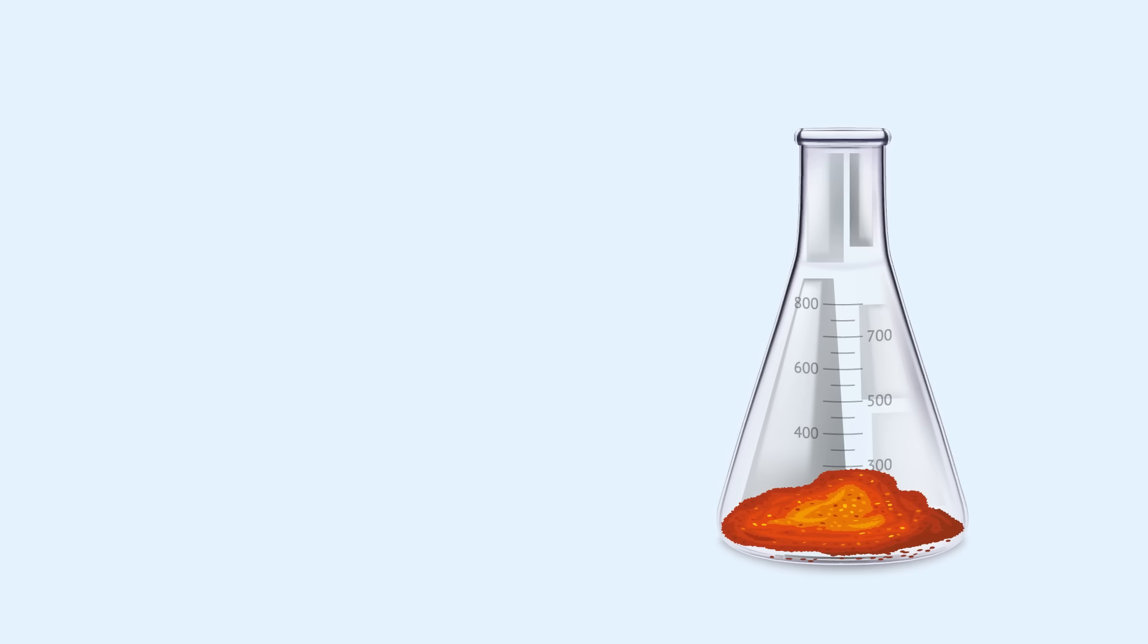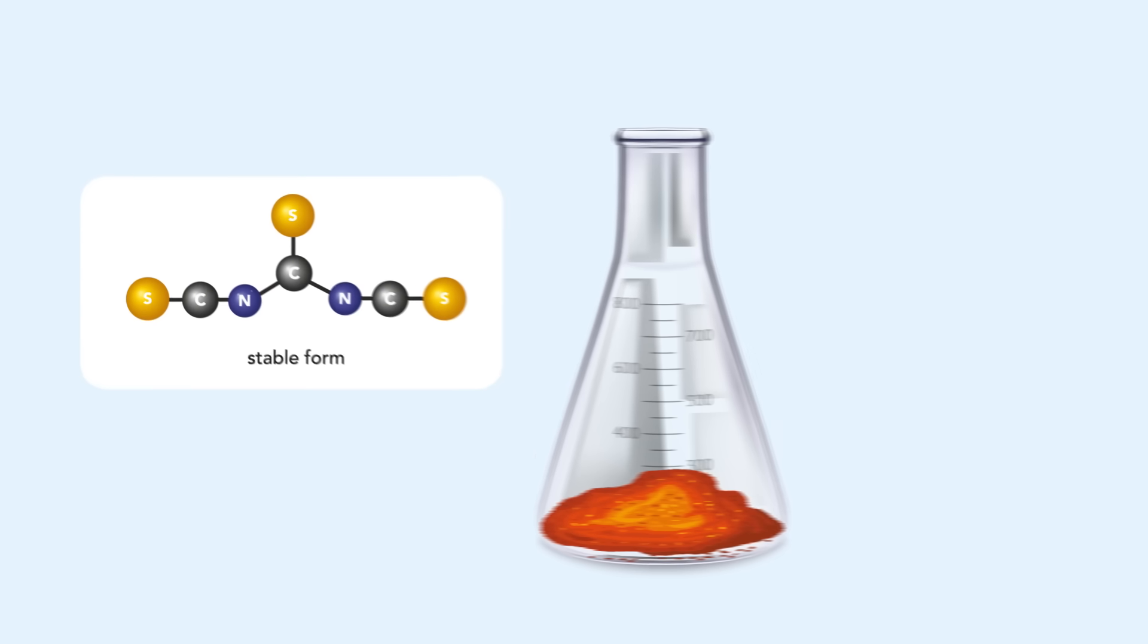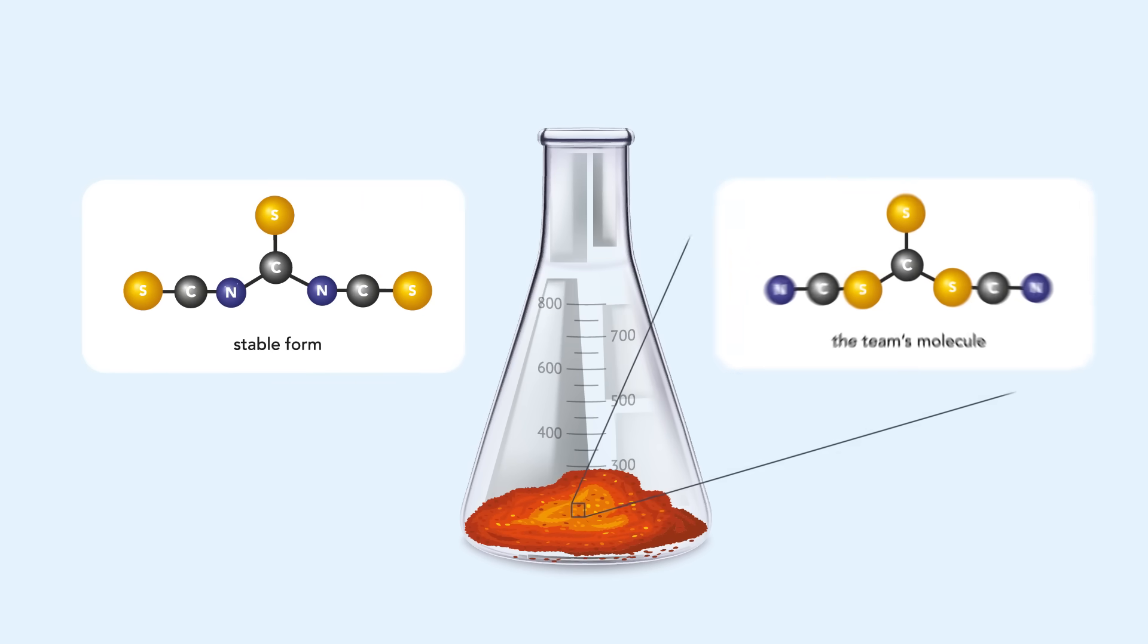In its stable form, the molecule's arms, which consist of a nitrogen atom, carbon atom and sulfur atom, are connected to the molecule's central carbon atom via each arm's nitrogen atom. However, in the team's molecule, these arms are back to front, connected through their sulfur atoms.